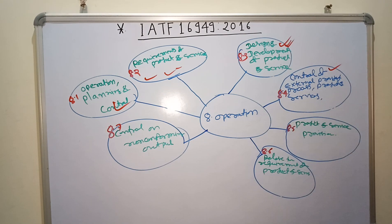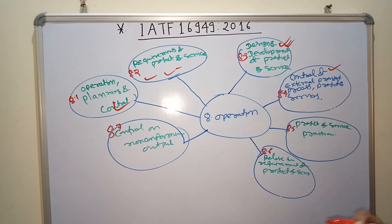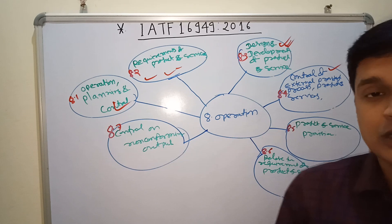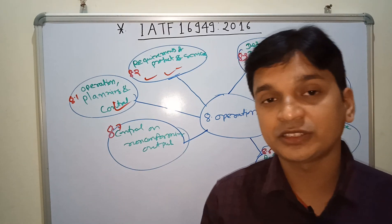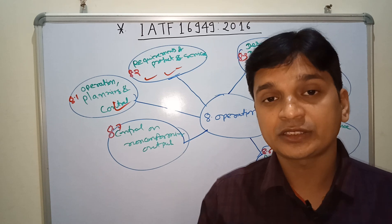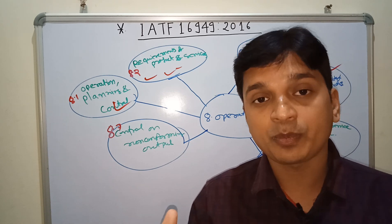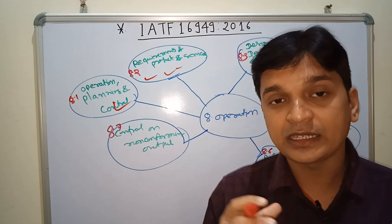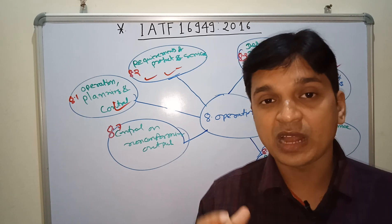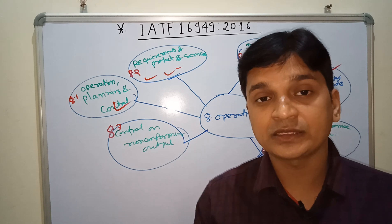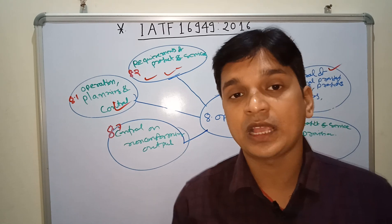Sub-clause 8.4 is Control of Externally Provided Products, Processes, and Services. This clause basically deals with supplier product requirements, supplier quality management system, supplier audit, second-party audit, the requirement of supplier-approved products, supplier acceptance, and supplier ranking. All of these things are very important and included in this clause.